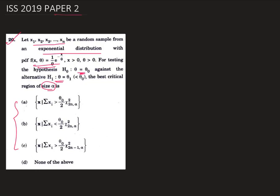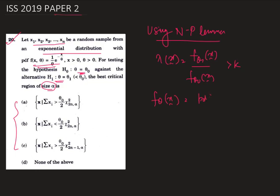Using the Neyman-Pearson lemma, we get that lambda(x) equals f(theta 1, x) divided by f(theta naught, x), which is greater than k, a constant. Now f(theta, x), the joint pdf of x1, x2, ..., xn, is 1 by theta to the power n, times e to the power minus sum over xi divided by theta.